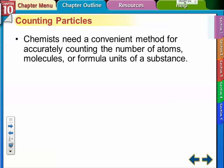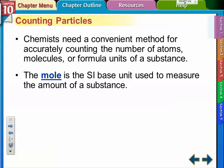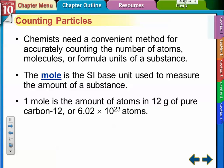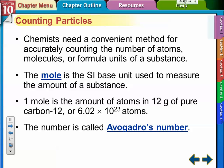Chemists need a method to count atoms, molecules, and formula units of substances, so they came up with the mole. The mole is the SI unit used to measure the amount of a substance. It's a huge number — 6.02 times 10 to the 23rd. The mole is defined as 12 grams of pure carbon-12, which has six protons and six neutrons. If you have 6.02 times 10 to the 23rd of those atoms together, they weigh exactly 12 grams.